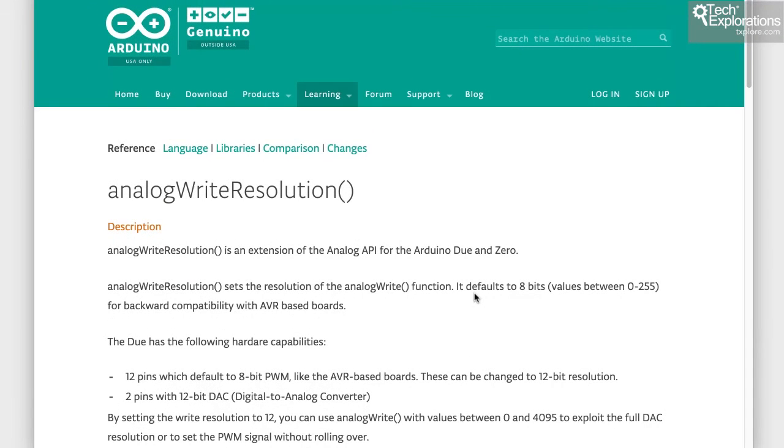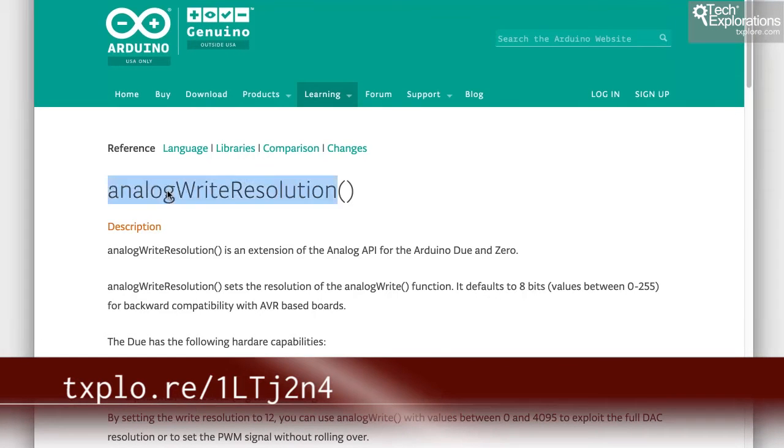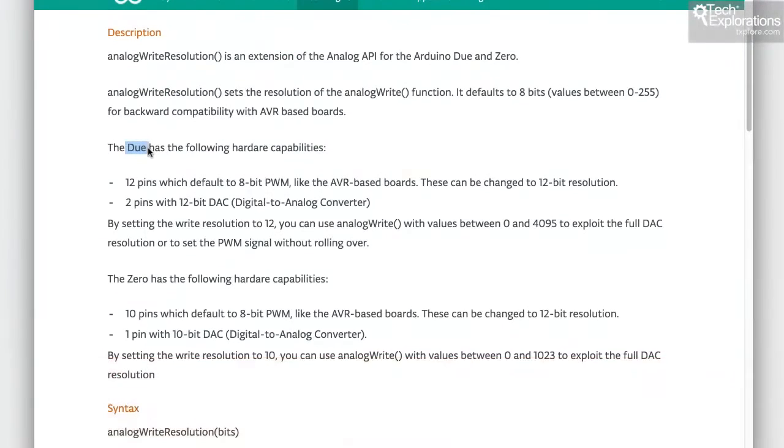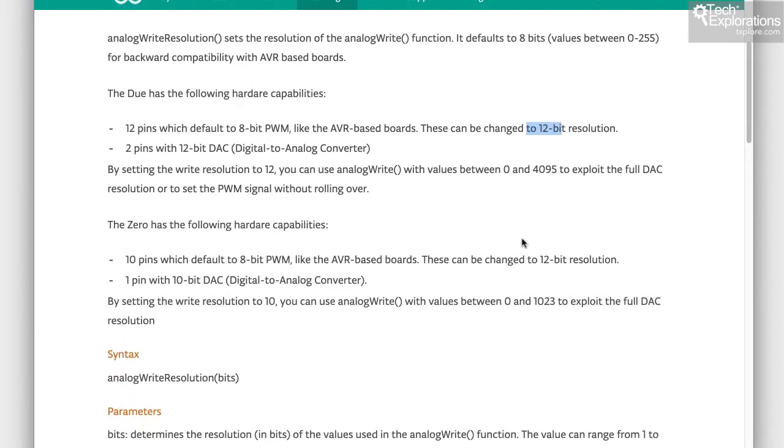To change the PWM resolution on the Arduino Zero and other Arduinos that have the same capability, you use the analogWriteResolution function. You can see here that in the case of the Due, for example, which I'm looking at in a different section of this course, we have the ability to configure PWM pins to 12-bit resolution maximum, and you have the same resolution on the Arduino Zero.